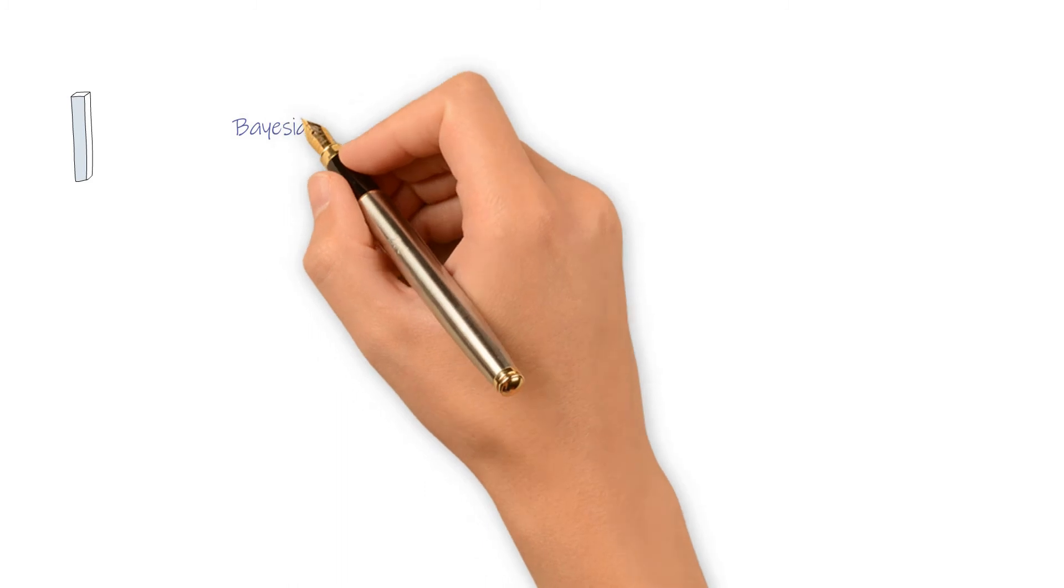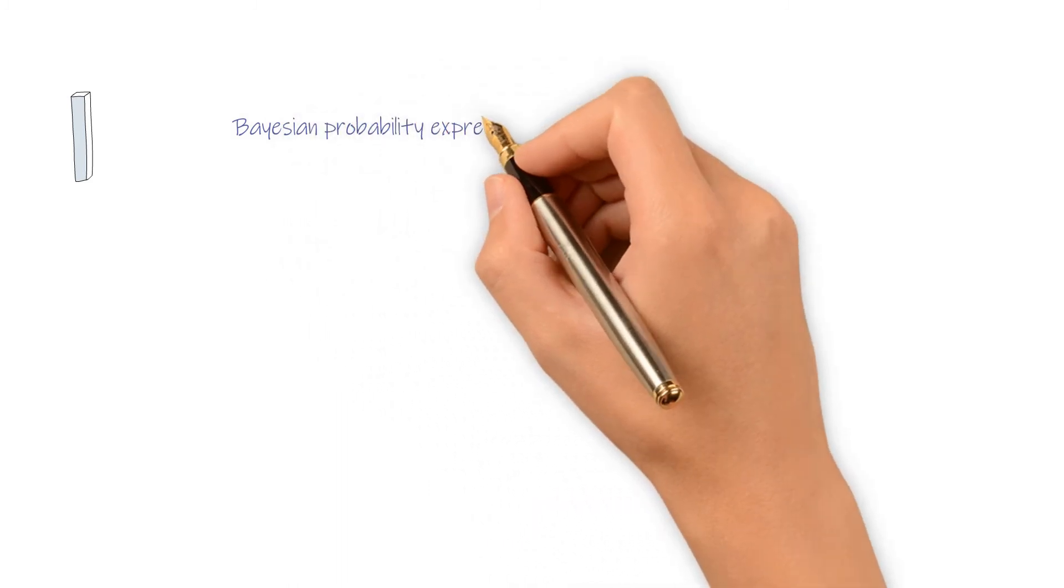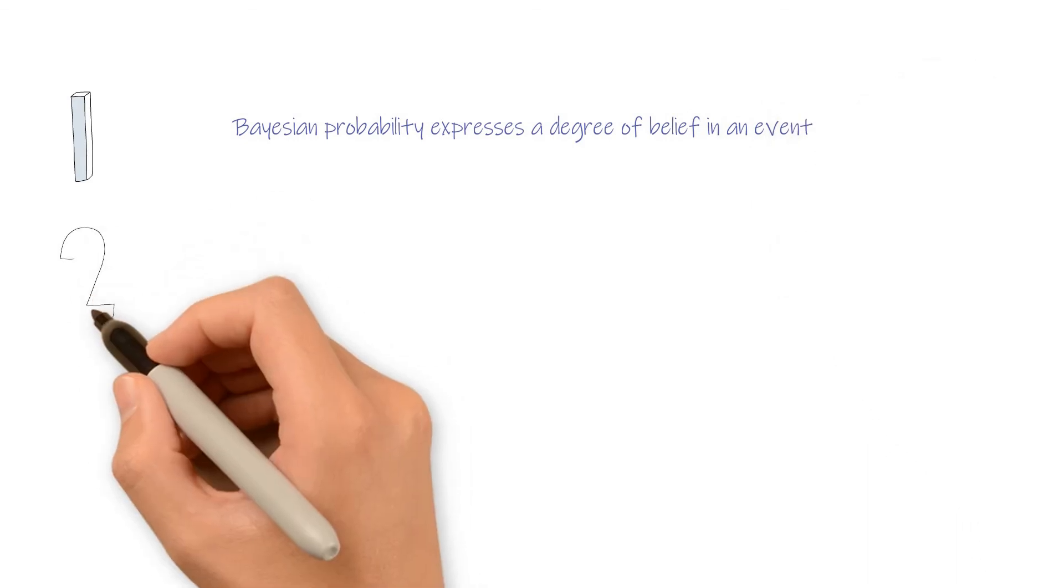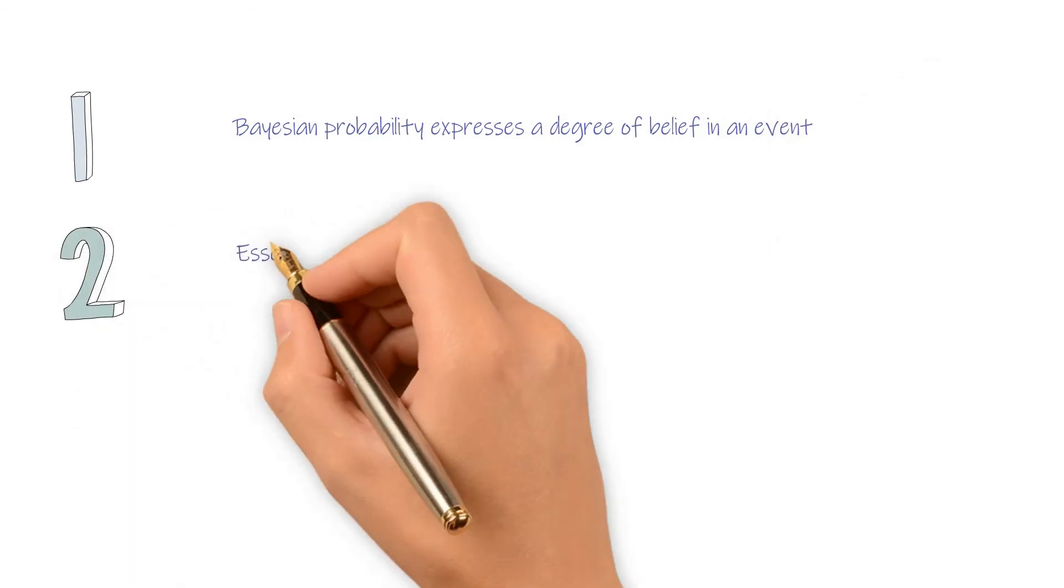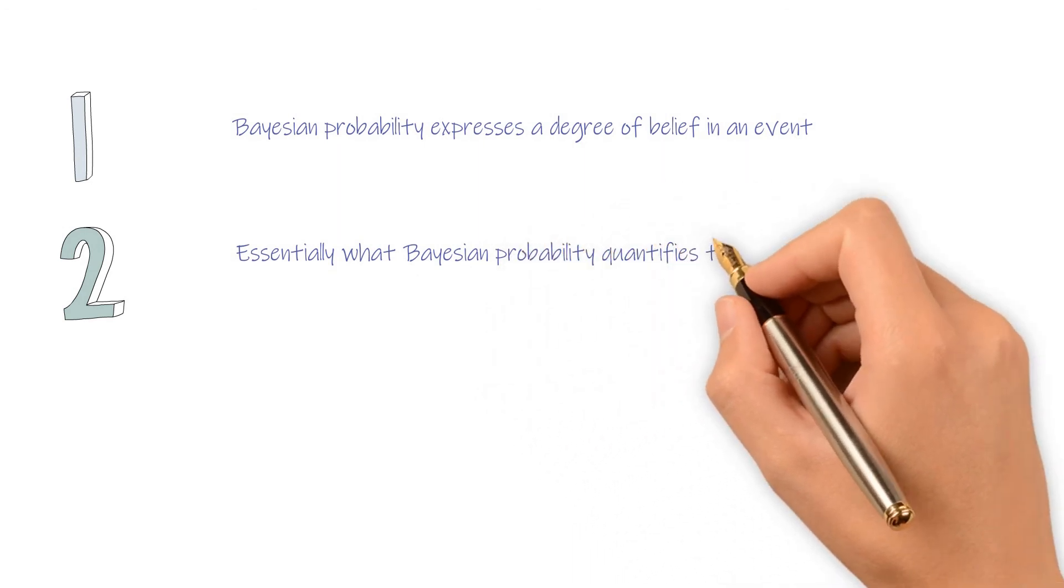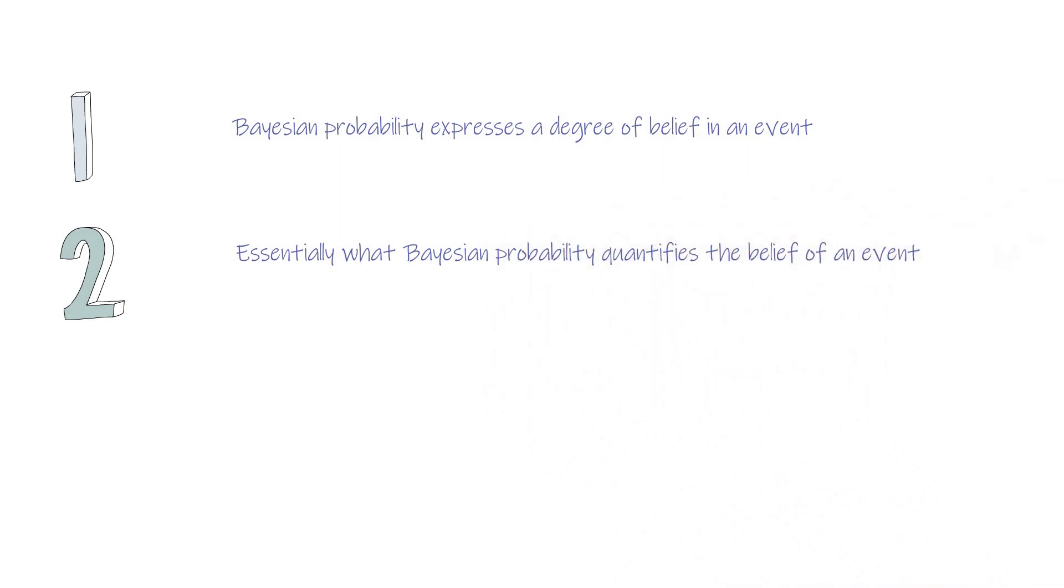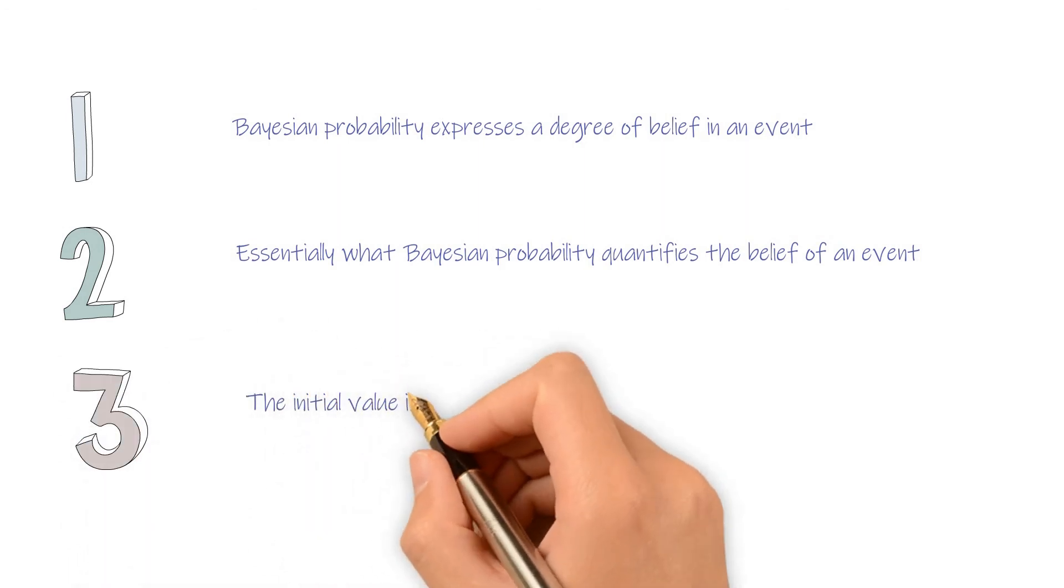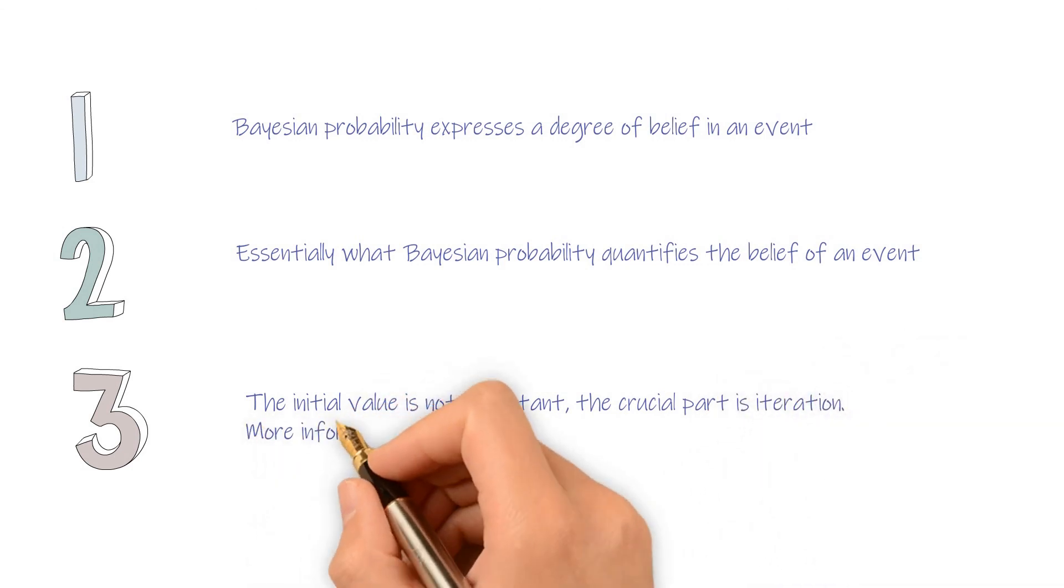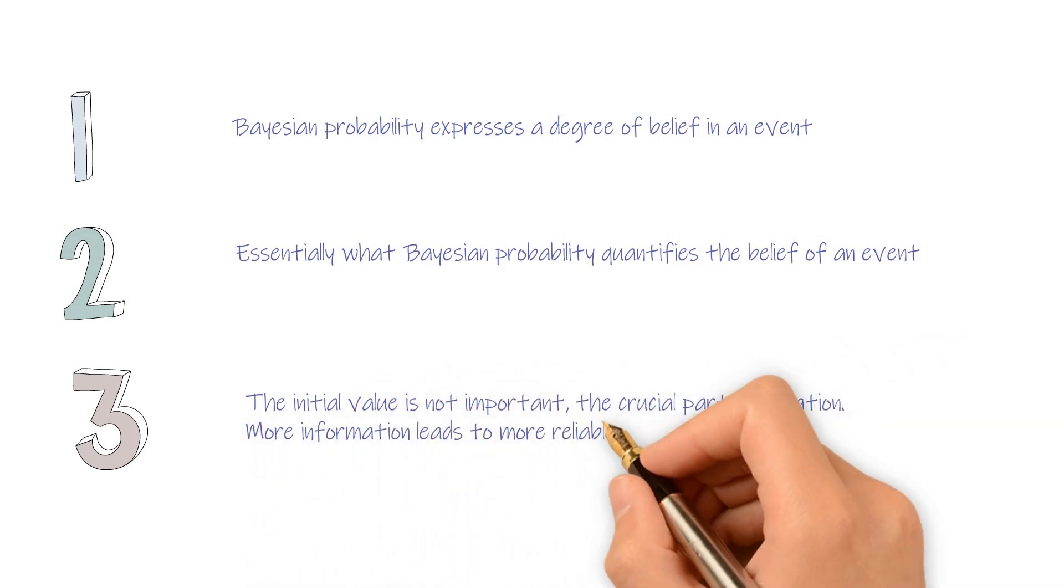Three takeaways. First, Bayesian probability expresses a degree of belief in an event. Second, Bayesian probability quantifies the belief of an event. Third, two advantages: the initial value is not important, the crucial part is iteration, and more information leads to more reliable Bayesian probability.